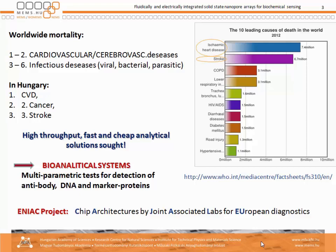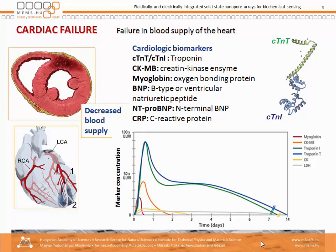We need a solution which can be used on-site. Bioanalytical systems are of course multiparametric tests for the detection of antibody, DNA and marker proteins. This is what we aimed at in this ENIAC project, a European large consortium project, to form chip architectures by joint lab efforts for European diagnostics. I will present part of the achieved results.